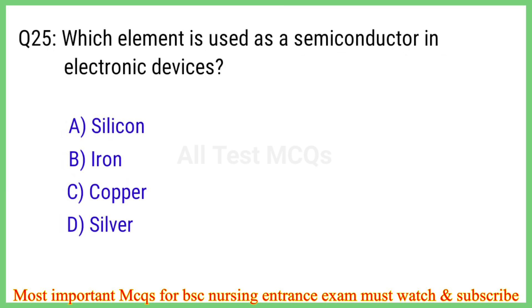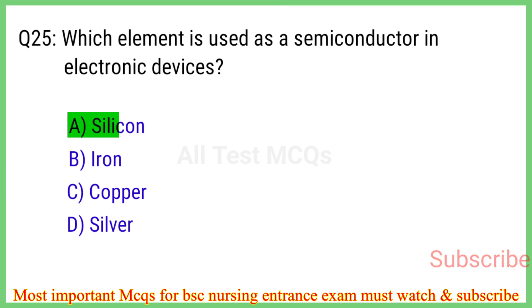Q25. Which element is used as a semiconductor in electronic devices? The correct answer is option A: Silicon.